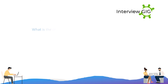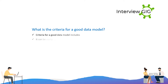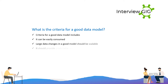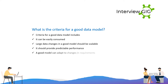What is the criteria for a good data model? Criteria for a good data model includes: it can be easily consumed; large data changes in a good model should be scalable; it should provide predictable performance; and a good model can adapt to changes and requirements.